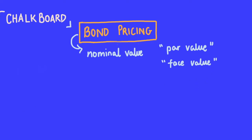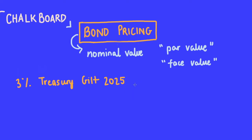The best way to understand this is with a quick example. Let's say there's a 3% Treasury gilt — so we're working with UK bonds — a 3% Treasury gilt 2025, priced at 106 pounds and 39 pence. So the bond is priced at 106.39, and that's the current value of a holding.